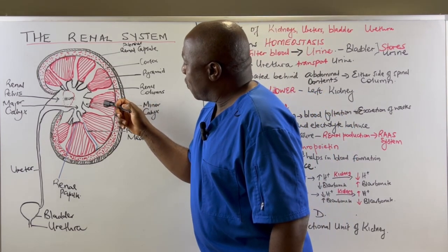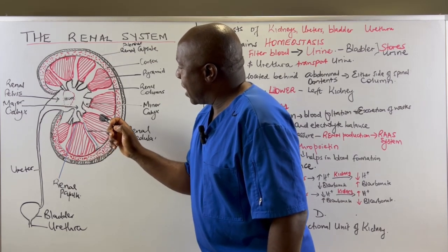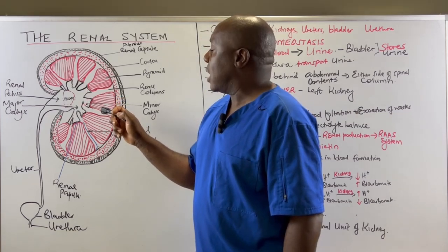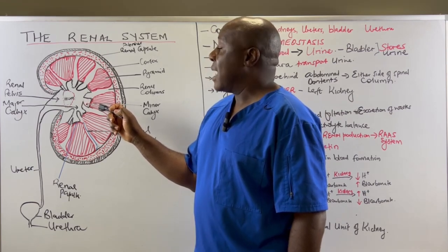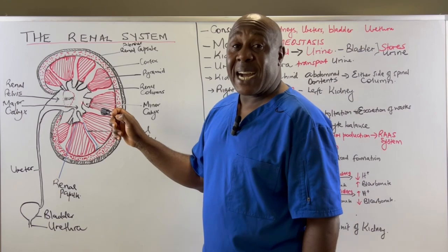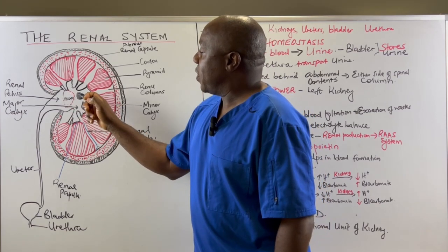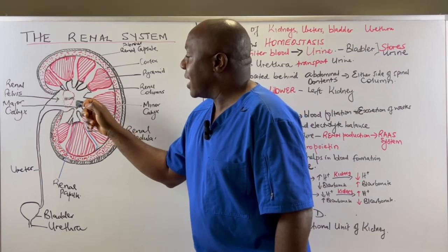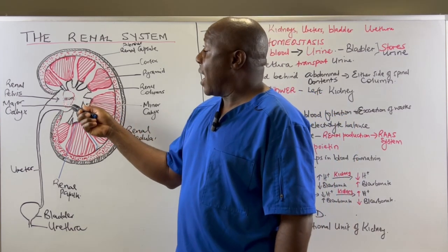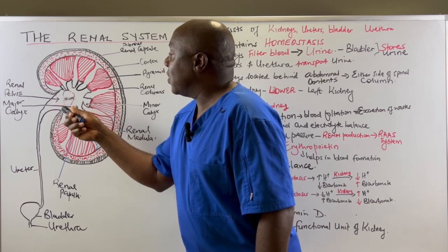The narrow ends of a renal pyramid are referred to as the renal papilla. Below the renal papilla we have structures called minor calyces. A number of minor calyces merge to form what is referred to as a major calyx. The area of the kidney where blood vessels enter and exit is referred to as the renal hilum. This sac-like structure is referred to as the renal pelvis, which marks the exit of the ureters from the kidneys.